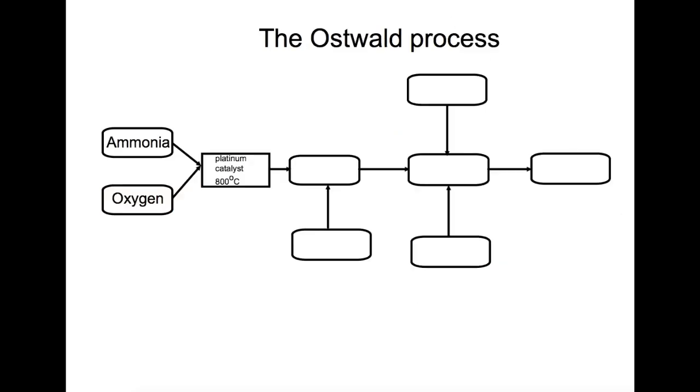The Ostwald process is used to produce nitric acid from ammonia. Ammonia and oxygen are first combined together over a platinum catalyst at 800 degrees. This is the catalytic oxidation of ammonia. By doing this, you produce nitrogen monoxide.